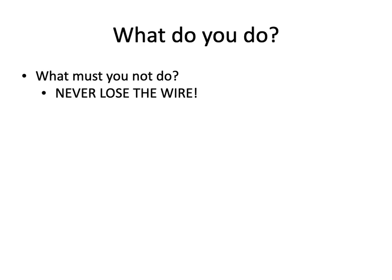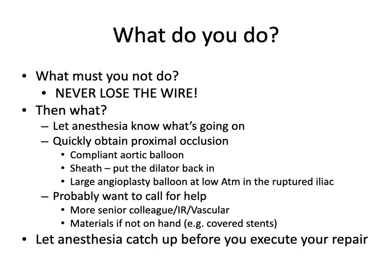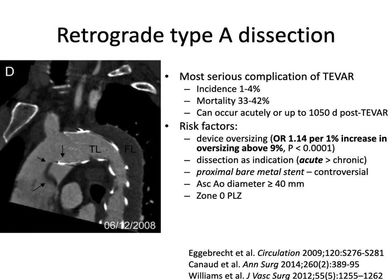If iliac rupture occurs: let anesthesia know, obtain proximal control, and call for help. Have covered stents on hand. Once you've gotten control, let anesthesia catch up and get the pressure back up before performing your repair, as that will involve opening up the proximal occlusion. Other serious complications include retrograde type A dissection, with risk factors including a dilated ascending aorta, excessive oversizing above 9%, acute dissection as the underlying pathology, and a proximal landing zone in zone zero.